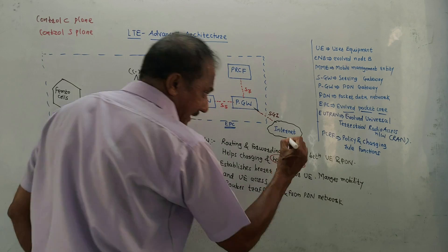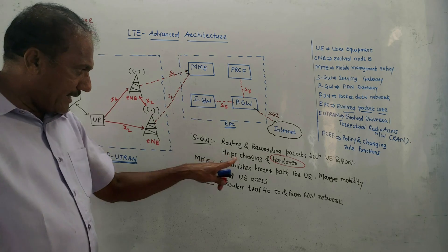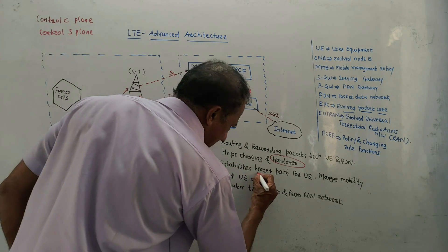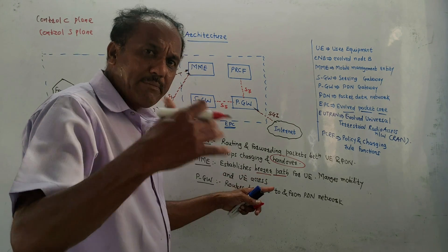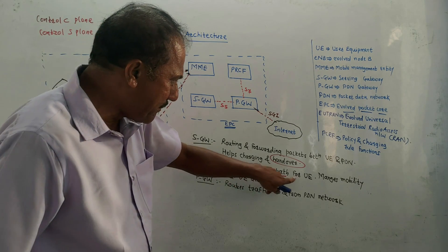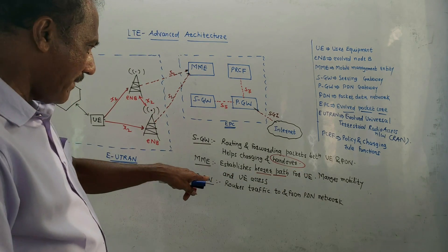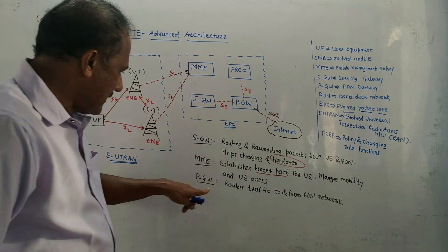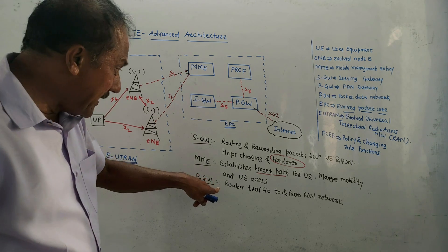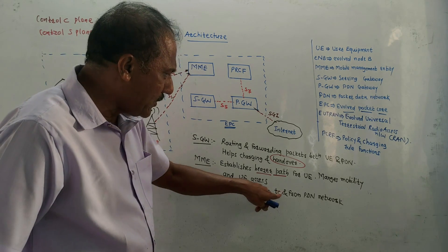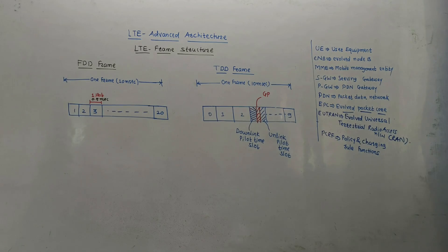MME, the mobile management entity, establishes bearer paths for UE and manages mobility and UE access. PGW, the PDN gateway, is used to route traffic to and from the PDN network.